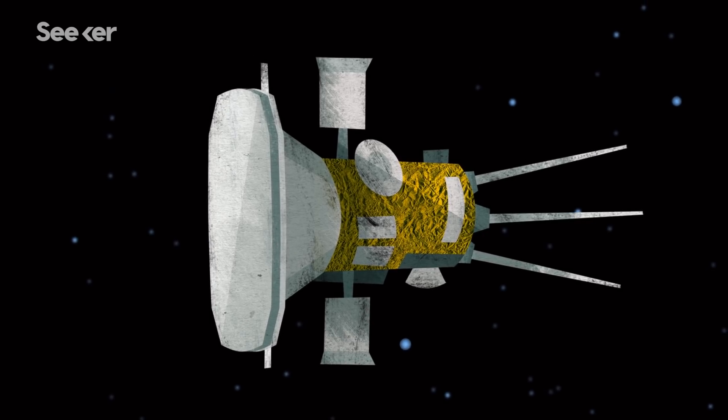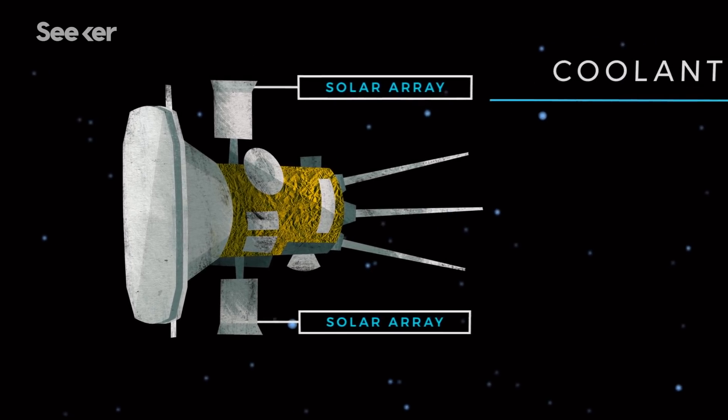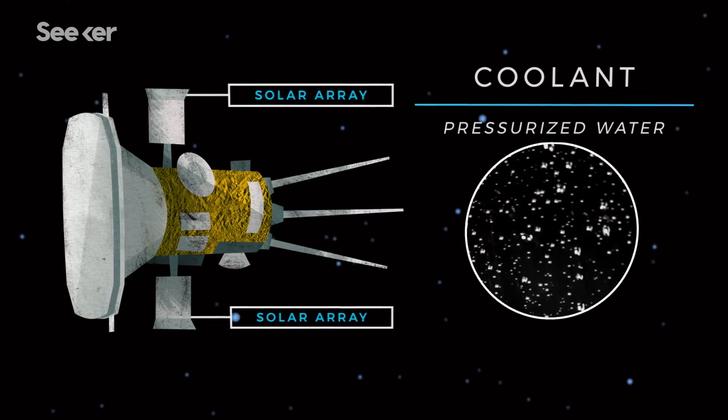Twin solar arrays will power the spacecraft and its cooling system, which surprisingly utilizes a low-tech coolant, pressurized water.